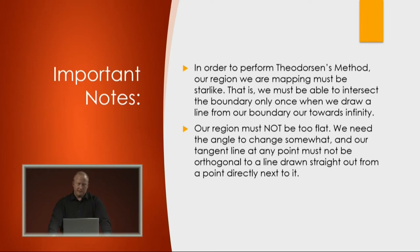Something to know before you try to do this is that in order to perform Theodorsen's method, your region that you want to map to has to be star-like. That is, if you draw a point at some point in the target domain and you draw a line from it, it can only cross the boundary once. So if you were to draw something, it would have to be approximately an ellipse or a circle from at least that point you draw it from.